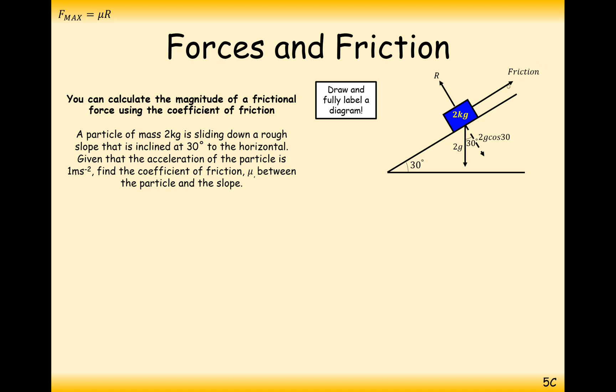Friction always acts, how do you know which way friction acts? It always acts in the opposite direction to the way the particle is moving. Let's start resolving the forces then. For this 2g force here, we're going to have 2g cos 30, that's going to balance with the R force there. And we're going to have 2g sin 30 acting down the slope in the opposite direction to friction.